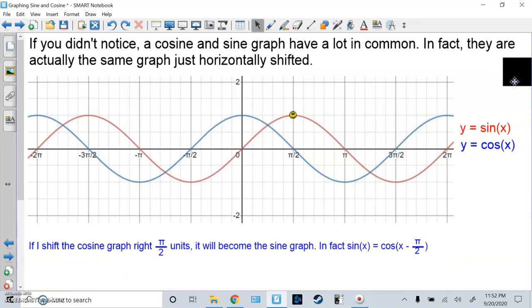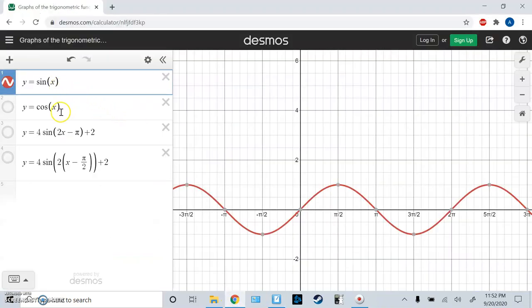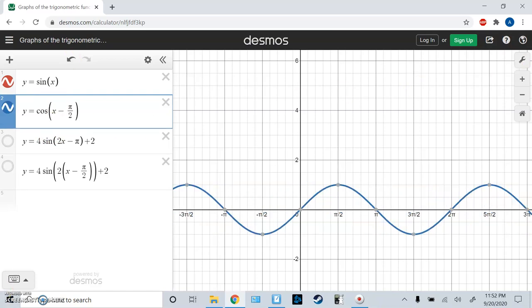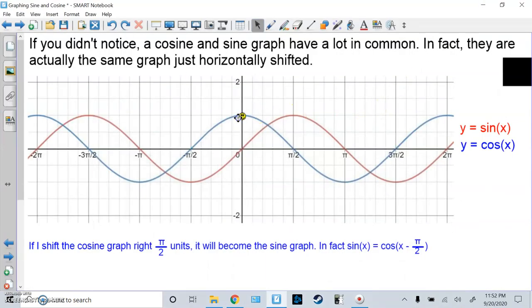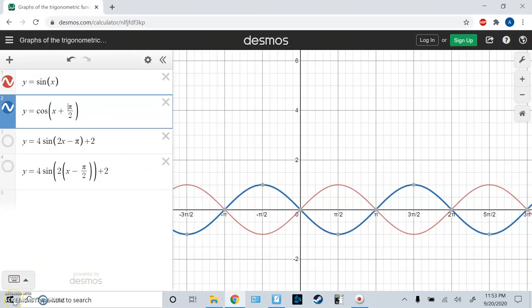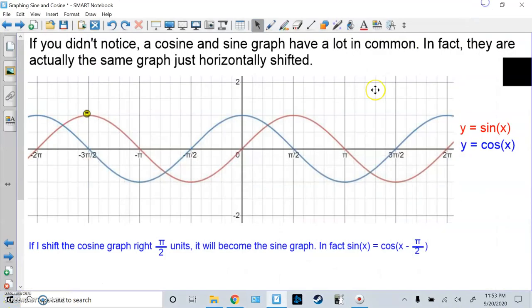So actually, sine of x is equal to cosine of x minus pi over 2. If I want to shift it to the right side, I'm going to do minus pi over 2. And it's the same graph. I could also shift it the other way. Instead of going right pi over 2, I could have gone left 3 pi over 2. So if I do plus 3 pi over 2, it's the same graph.